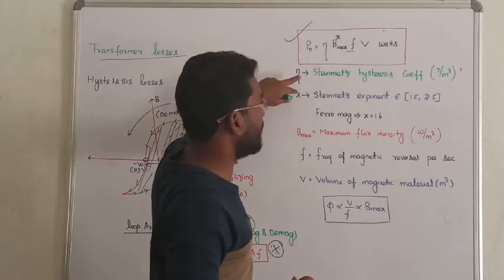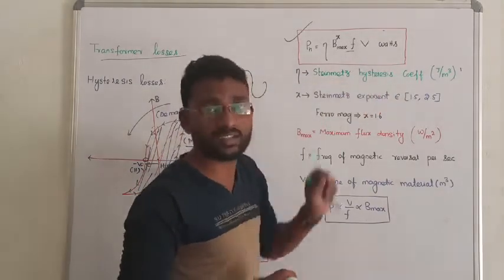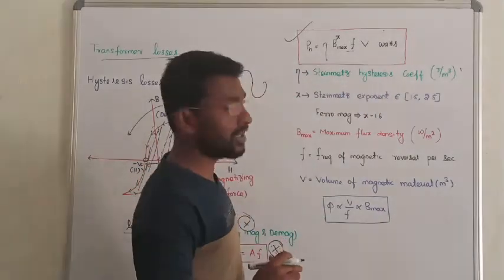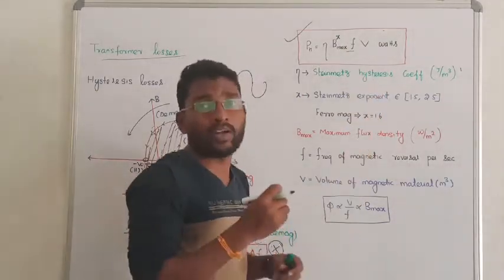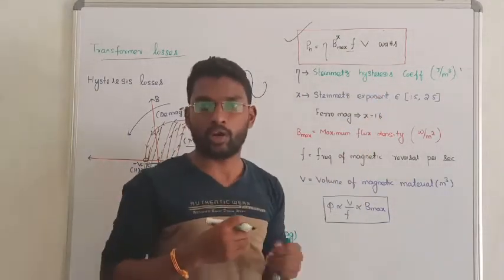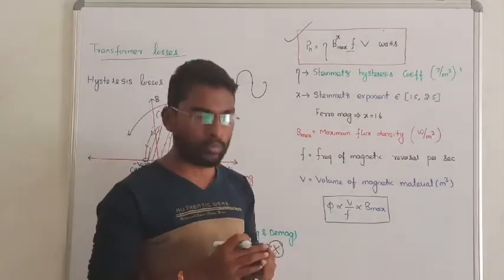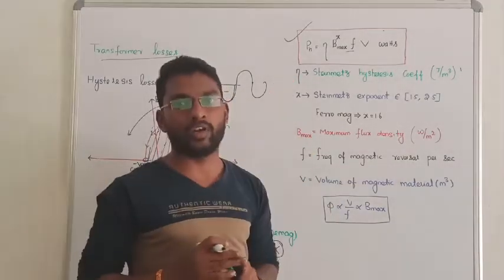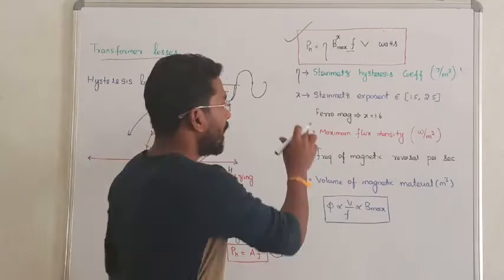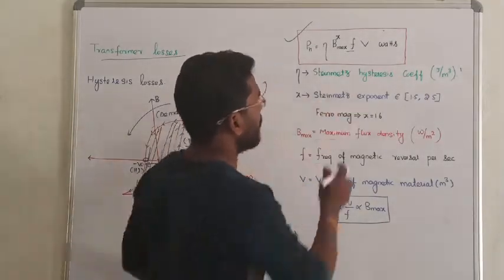Eta is the Steinmetz hysteresis coefficient or Steinmetz constant. It depends on the material. For any material used, the Steinmetz constant will vary based on the material, and also the Steinmetz exponent varies.